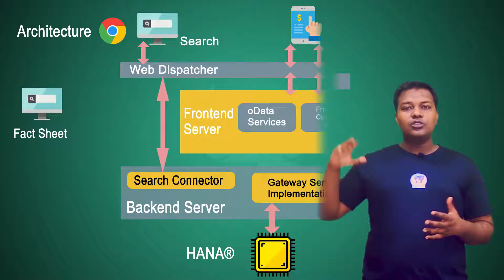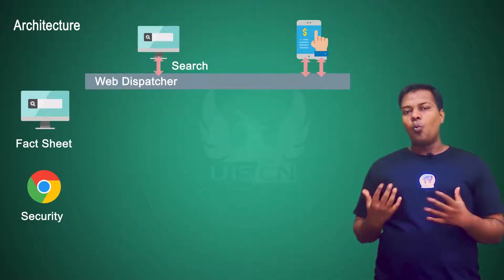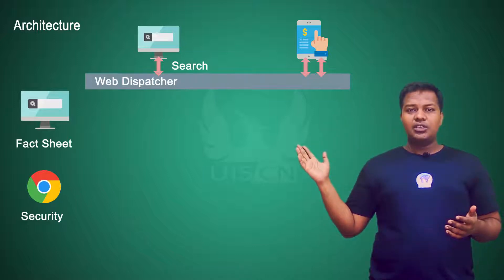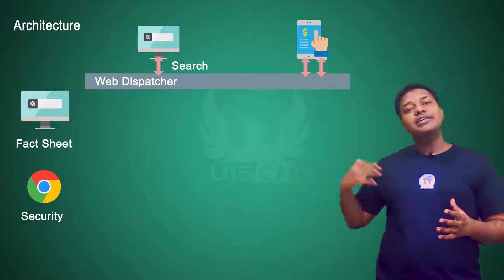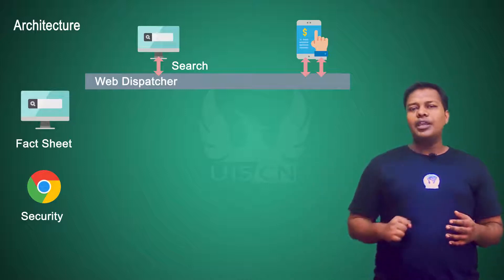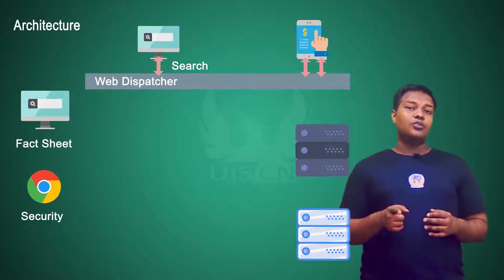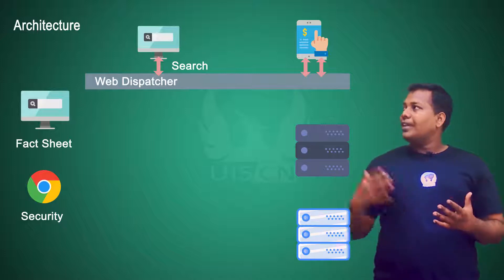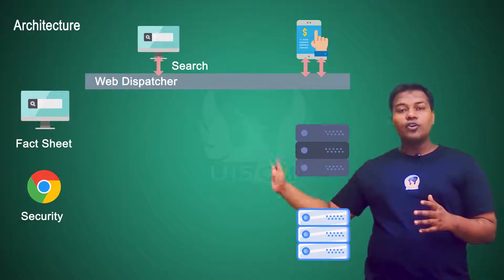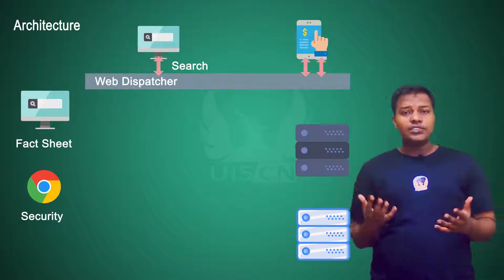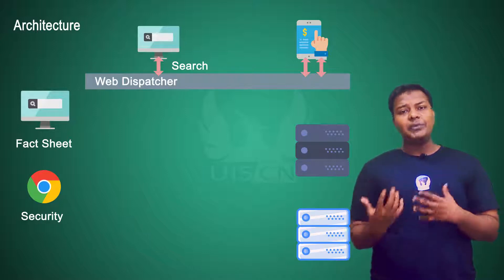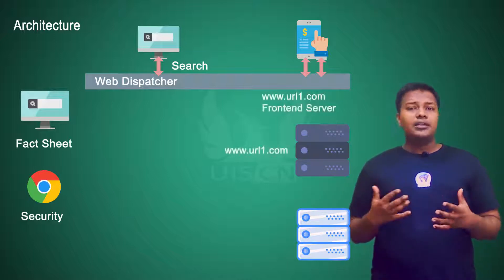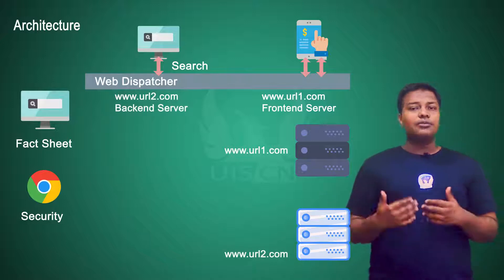Those results are passed directly to the application. Now let's understand why this web dispatcher is required. Our application, which has the additional capability of searching the entire database, is now talking to a new backend server. So we have two servers that our application is actually talking to. We can simplify the diagram: server one and server two, both having different URLs or different IP addresses. For example, server one has www.url1.com and server two has www.url2.com.